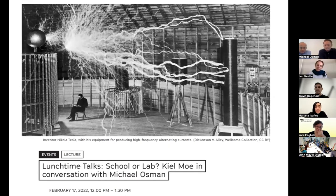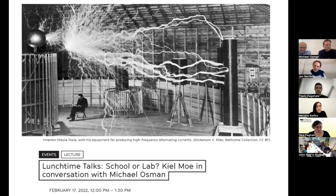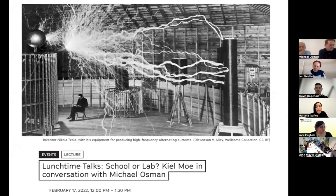He's currently visiting professor at MIT. He has been a three-time MacDowell Colony fellow, an Architectural League of New York prize winner, and a fellow at the American Academy in Rome, among many more awards. He has published extensively — very few people can write as much and as fast as Kil. Three of his latest books include Insulating Modernism: Isolated and Non-Isolated Thermodynamics in Architecture; Empire, State, and Building; and his latest publication titled Unless: The Seagram Building Construction Ecology.